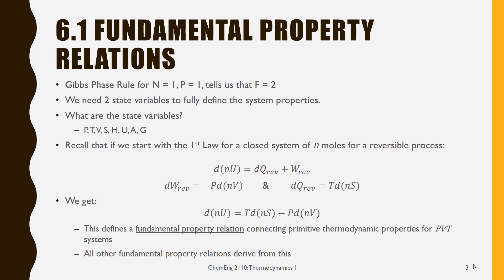So that tells me that I can specify any two state variables in order to fully define the system. So what are the state variables? Well, they are pressure, temperature, volume, internal energy, enthalpy, entropy, and then now I've added two new ones, A and G.